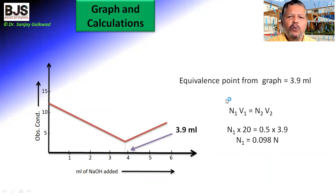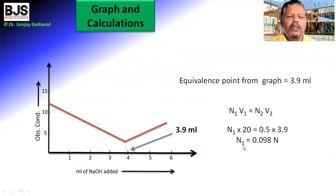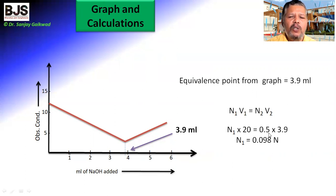From the equivalence point obtained from the graph, we apply N₁V₁ = N₂V₂. We can calculate the normality of the HCl. It is observed that 20 ml of acid was taken, and 3.9 ml of 0.5 normal NaOH was required. Therefore, the normality of the acid is 0.098 normal.